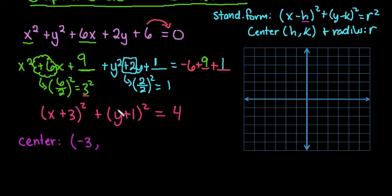And then since this is y + 1, it would be y minus negative 1. So my center is going to be at (-3, -1). And the radius, remember the radius is always the square root of the constant term. So I would take the square root of 4, which is 2.